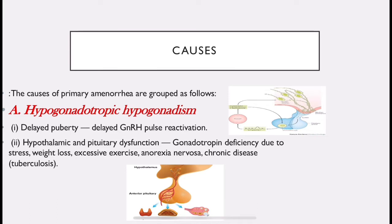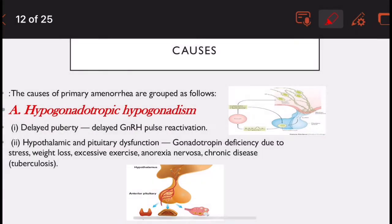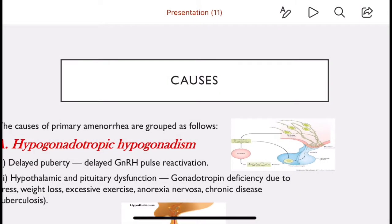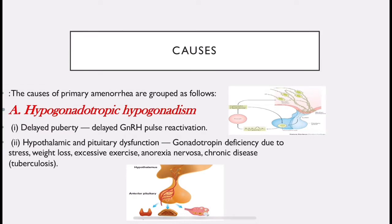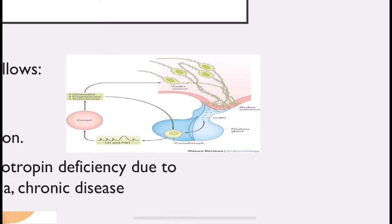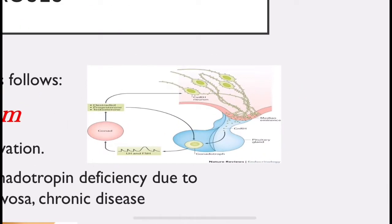The causes of primary amenorrhea are grouped as hypogonadotrophic hypogonadism — where both the gonadotrophin hormone and the gonads are deficient. Under this: delayed puberty due to delayed GnRH pulse reactivation. The GnRH pulse frequency and amplitude are critical for normal puberty; delayed pulse reactivation results in delayed puberty.